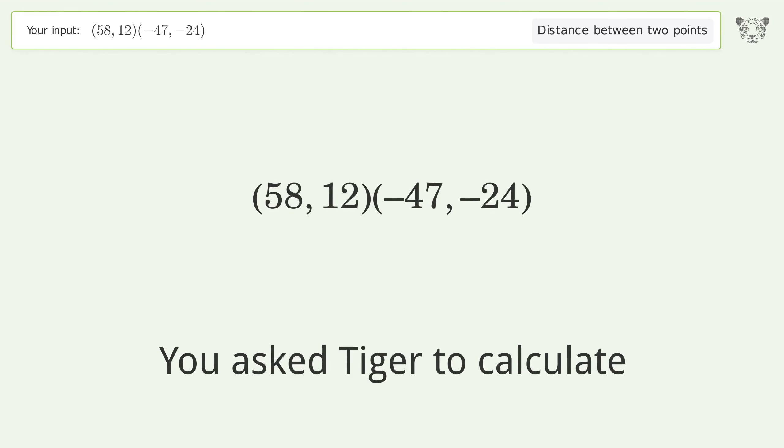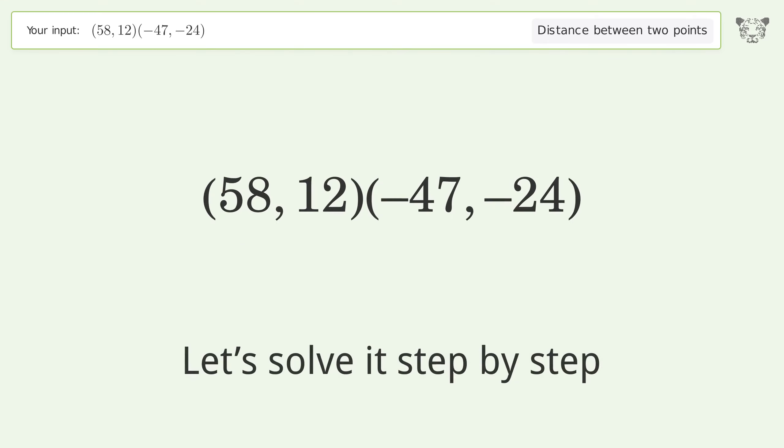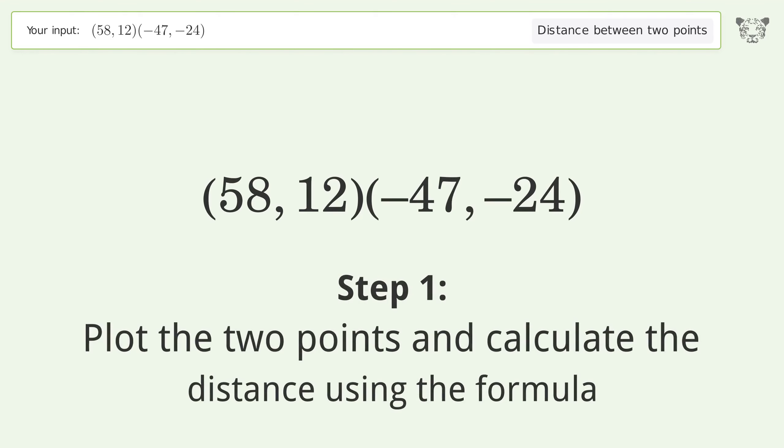You asked Tiger to calculate this. This deals with the distance between two points. The distance between the two points is the square root of 12,321 or 111. Let's solve it step by step. Plot the two points and calculate the distance using the formula.